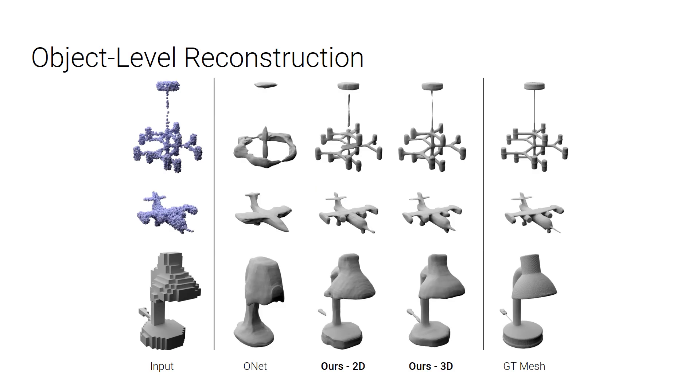Let's now look at some results. We first want to see if our convolutional method can also improve the quality of object level reconstruction. It turns out this is indeed the case, in particular for objects with complicated shapes. Our input could either be a noisy point cloud or a coarse voxelization of an object. We can see the original occupancy networks lose quite some details, whereas our convolutional models here preserve much more details.